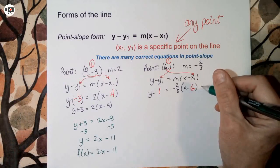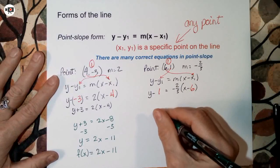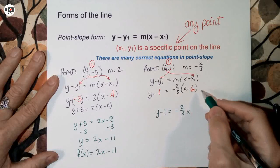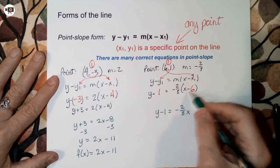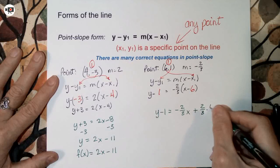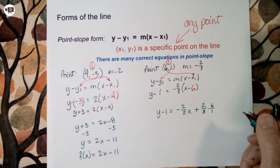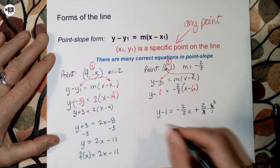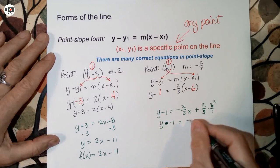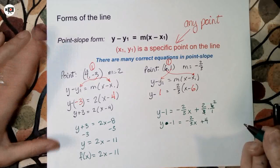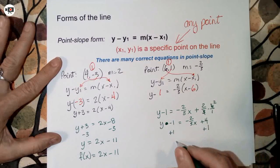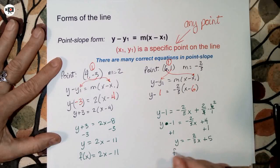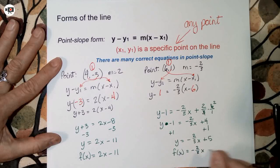Over here on the second example, let's fix it so we can put it into function form too. That'd be y minus 1 equals — distribute negative 2/3 times x, negative 2/3 times negative 6. Negative times a negative is a positive, and that'll be 2/3 times 6 over 1 — because all fractions have to be fractions when you multiply. Cancel, and that's 4. Now I need to isolate y. Both y equals and f(x) equals forms are correct for function form.